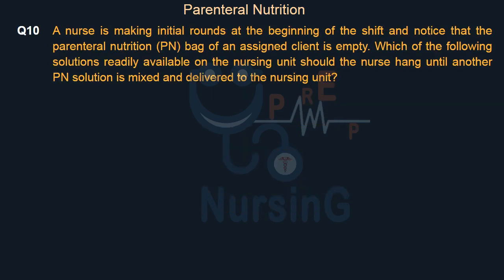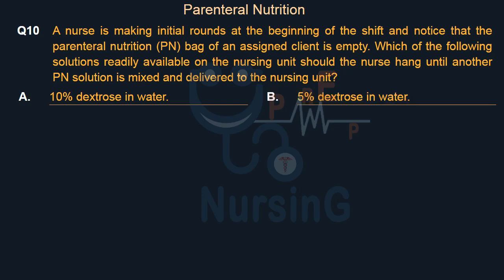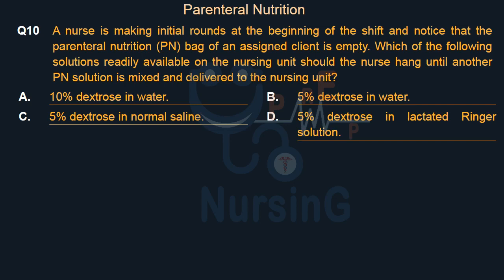A nurse making initial rounds at the beginning of the shift notices that the parenteral nutrition (PN) bag of an assigned client is empty. Which of the following solutions readily available on the nursing unit should the nurse hang until another PN solution is mixed and delivered? Option A: 10% dextrose in water. Option B: 5% dextrose in water. Option C: 5% dextrose in normal saline. Option D: 5% dextrose in lactated Ringer's solution.